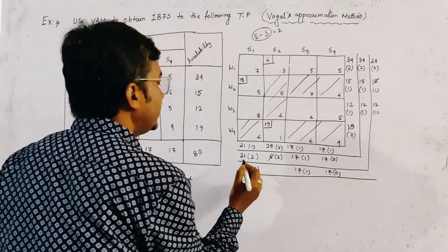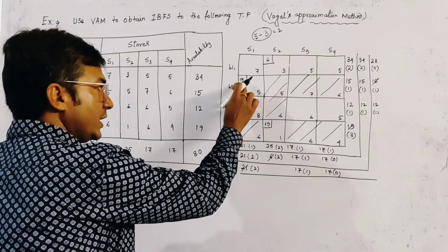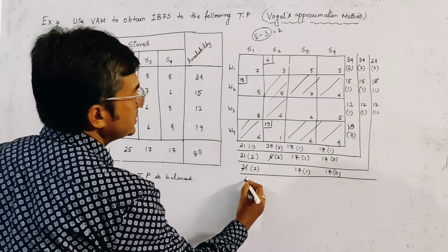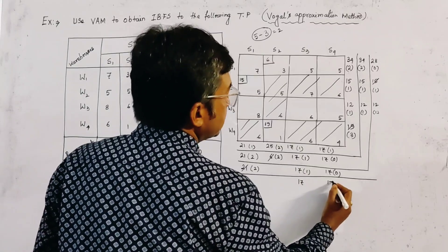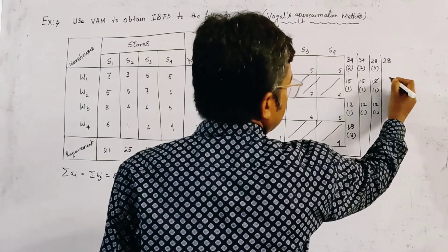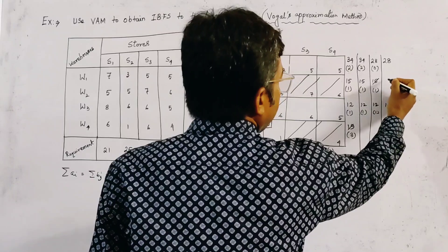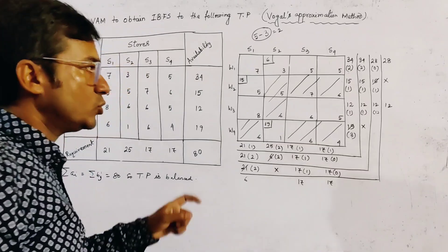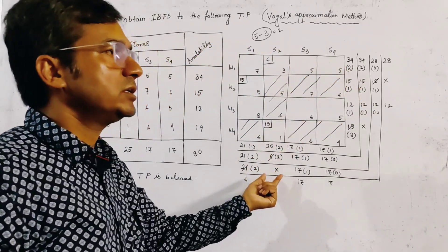When this availability is exhausted, the second row is crossed off. The remaining demand for the first column is 21 minus 15 equals 6. The other demands remain 17 and 17 as usual, and availability in row 1 is 28. We write cross signs to indicate there is no available amount for allocation or no demand in those cells.